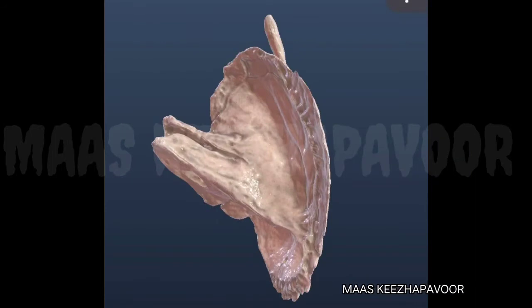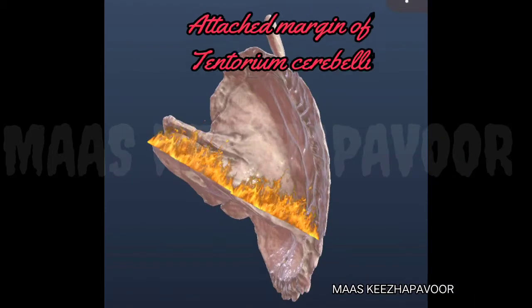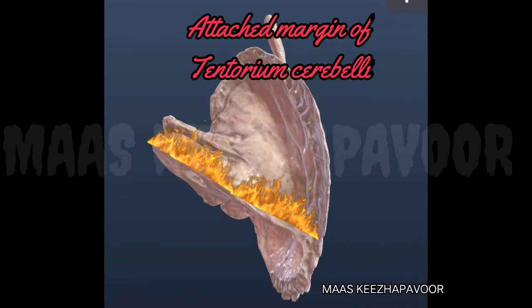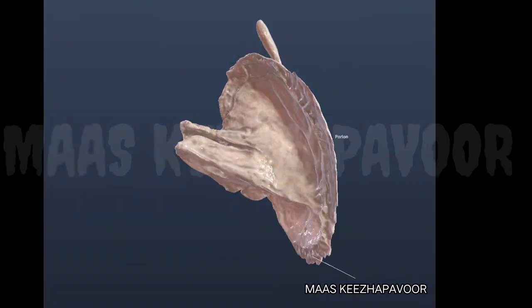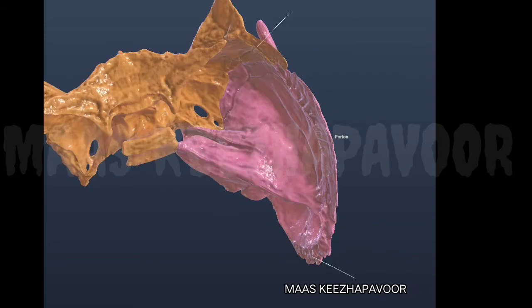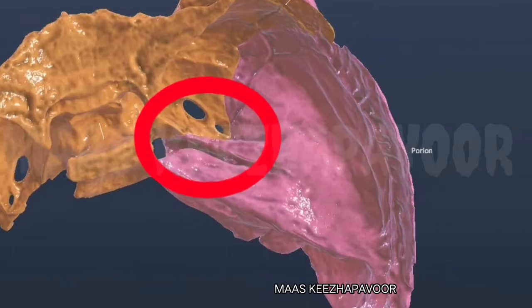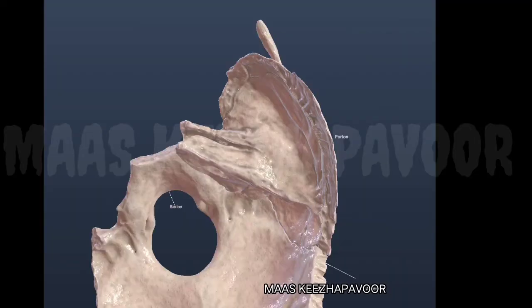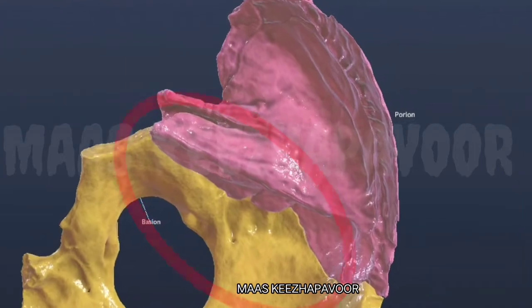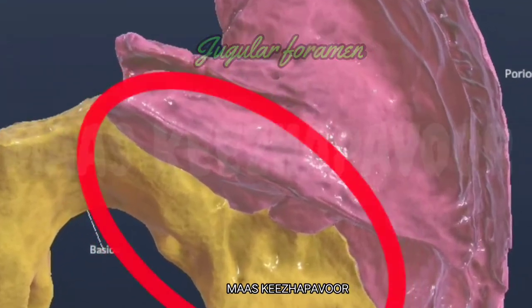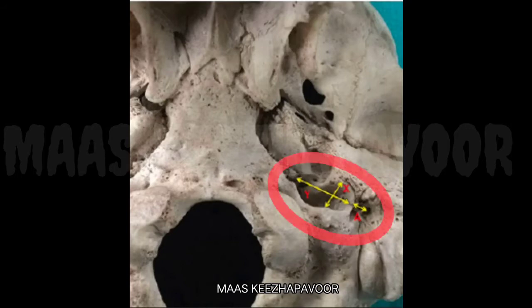When the tympanic canaliculus is traced upwards, a triangular notch is seen which lodges the inferior ganglion of the glossopharyngeal nerve. The superior border gives attachment to the attached margin of the tentorium cerebelli and is related to the superior petrous sinus. The anterior border articulates with the greater wing of sphenoid medially and the squamous part of temporal bone laterally. The posterior border articulates with the basilar part of the occipital bone medially and the jugular notch of the occipital bone laterally to form the jugular foramen.